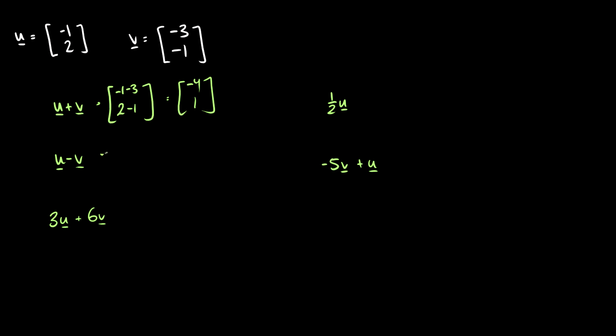What if we subtract v from u? So this is negative 1 minus negative 3, and 2 minus negative 1. So when we subtract a vector, we just go in the opposite direction. So this is negative 1 plus 3, which is 2, and 2 plus 1 is 3. So u minus v ends up at 2,3.